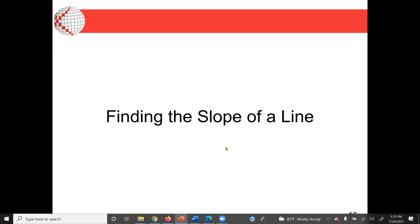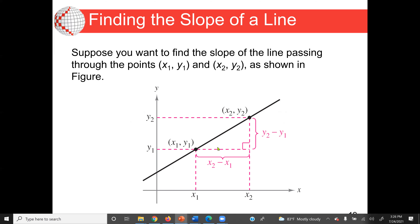Next, finding the slope of a line. Sometimes we may be given two points and we have to find the slope. A point consists of two coordinates, x1 and y1. My second point would be x2 and y2. We can see in the graph we have two points, (x1, y1) and (x2, y2). The difference of y2 minus y1 divided by x2 minus x1 will give me the slope.